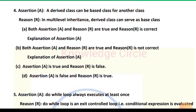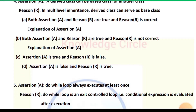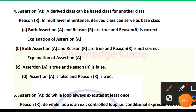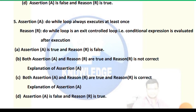Question 4 — Assertion: A derived class can be a base class for another class. Reason: In multi-level inheritance, a derived class can serve as a base class. Both assertion and reason are true and the reason is the correct explanation of the assertion, so option A is correct.